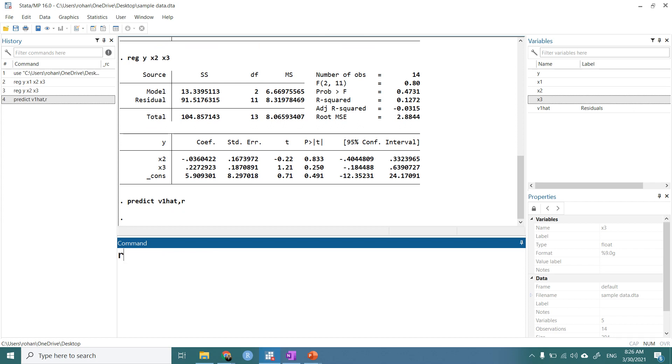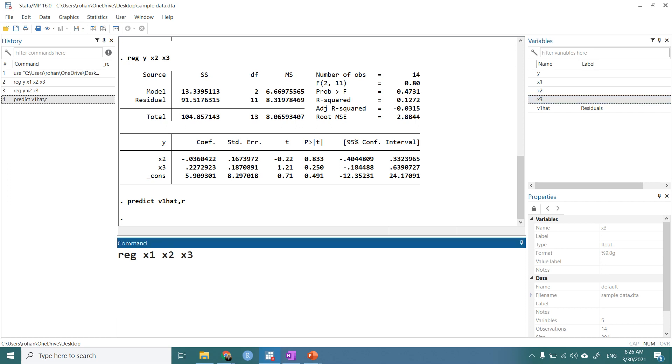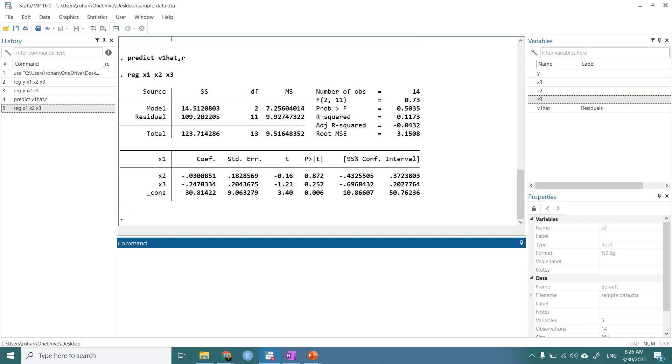And again, we will net off the effect of x2 and x3 from x1. So to do it, we will regress x1 on x2 and x3. And again, we will predict the error term: predict v2 hat, comma, r.